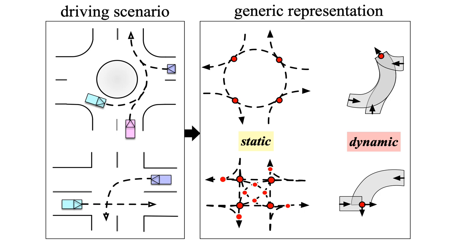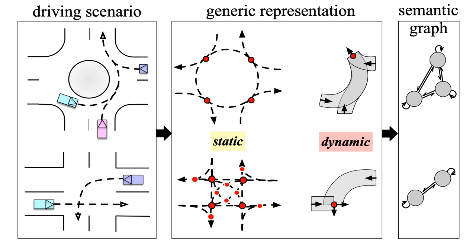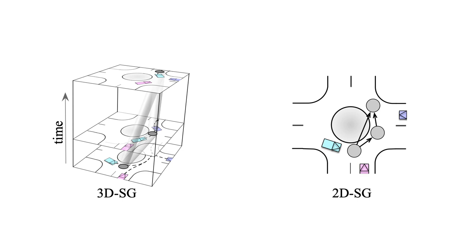After that, we utilize the proposed semantic graphs to construct structural and spatial-temporal relations within these representations. So given a current scenario, we're able to utilize a two-dimensional semantic graph to describe the scene, and we want to predict how the current driving scene will be evolved into the future, which can be represented by a set of three-dimensional semantic graphs.